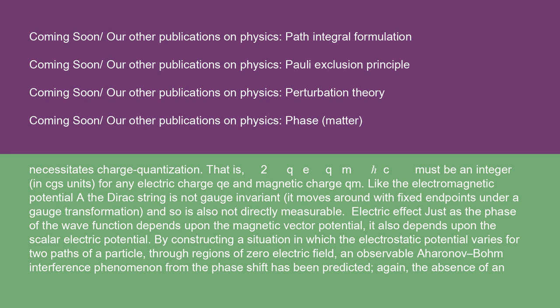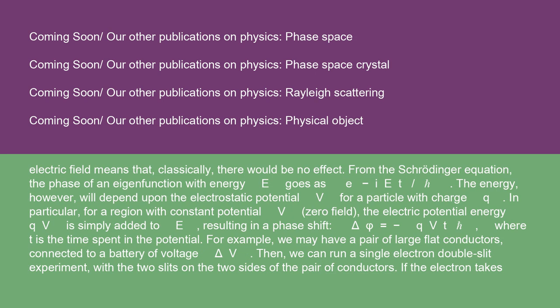Electric effect: Just as the phase of the wave function depends upon the magnetic vector potential, it also depends upon the scalar electric potential. By constructing a situation in which the electrostatic potential varies for two paths of a particle through regions of zero electric field, an observable Aharonov-Bohm interference phenomenon from the phase shift has been predicted. Again, the absence of electric field means that, classically, there would be no effect. From the Schrödinger equation, the phase of an eigenfunction with energy E goes as e^(-iEt/ℏ). The energy, however, will depend upon the electrostatic potential V for a particle with charge Q. In particular, for a region with constant potential V (zero field), the electric potential energy QV is simply added to E, resulting in a phase shift ΔΦ = -QVT/ℏ, where T is the time spent in the potential.